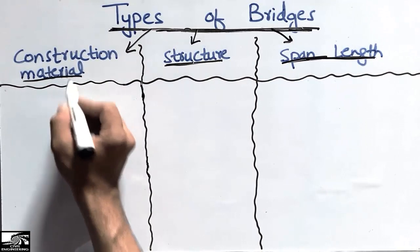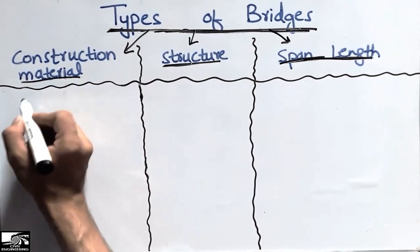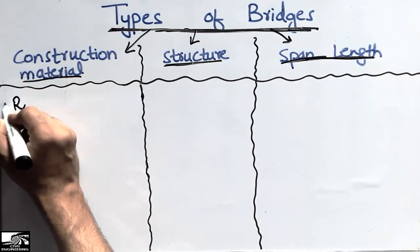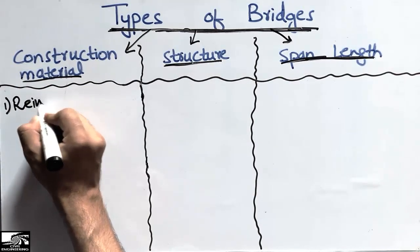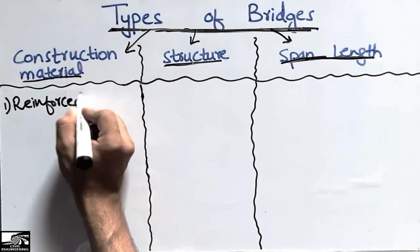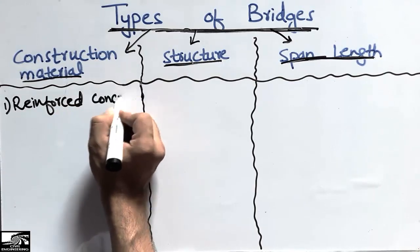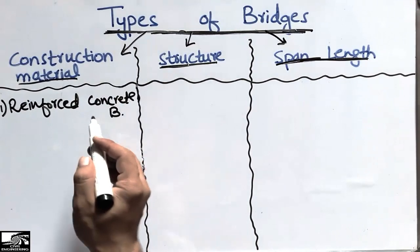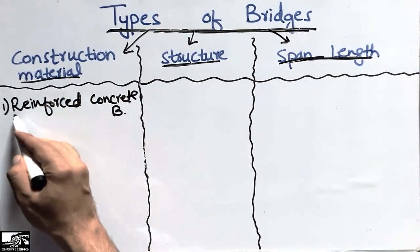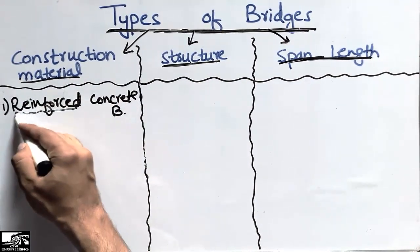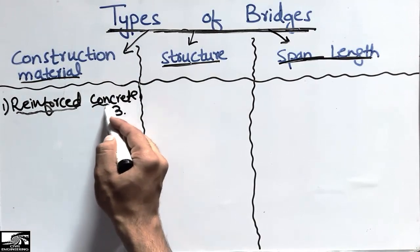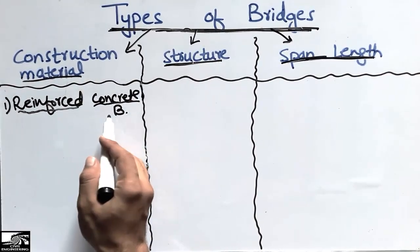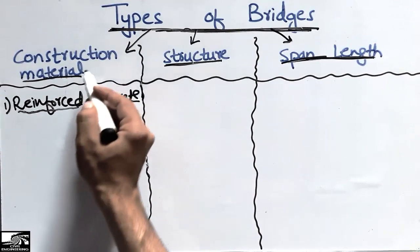Coming to the construction material, they offer sub-classifications of bridges. According to the construction material, they include the reinforced concrete bridge. Reinforced concrete bridges are those bridges which are made up of reinforced concrete — meaning steel reinforcement and concrete combined. We call these reinforced concrete bridges, and they come under the category of construction material bridges.